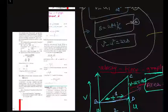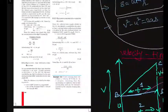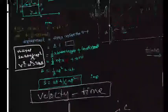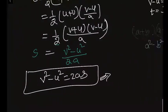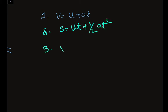In the last video we discussed how the equations of motion are derived from the graphical method. There are three very important equations: the first is V = U + AT, the second is S = UT + ½AT², and the third is V² - U² = 2AS.